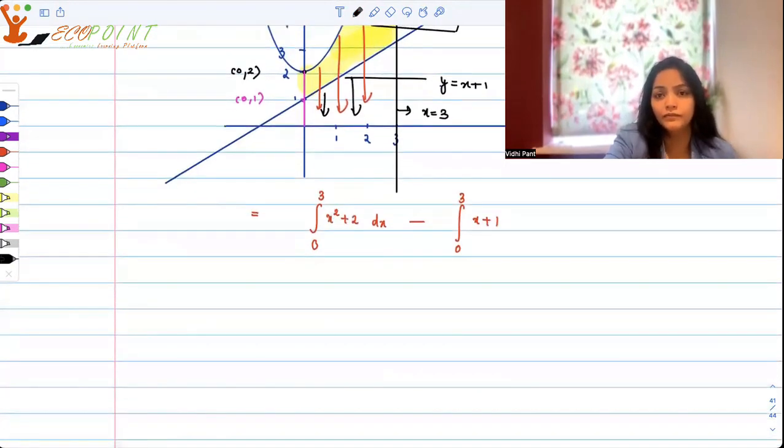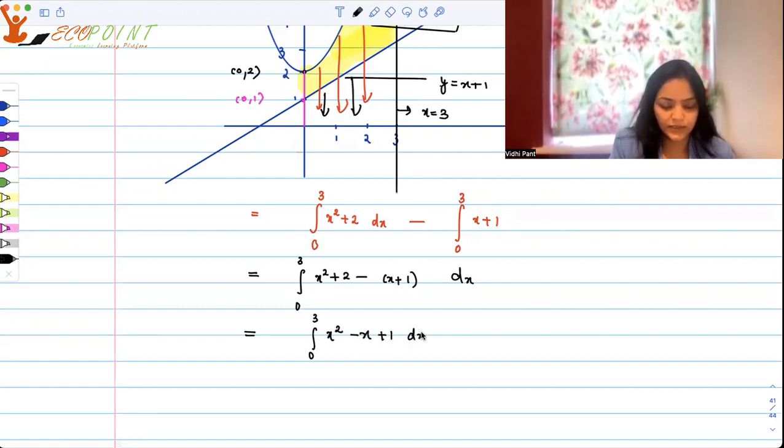So which means what we need to figure out is the integral from 0 to 3 of x squared plus 2 minus x plus 1 dx, which basically will give you the integral from 0 to 3 of x squared minus x plus 1 dx.